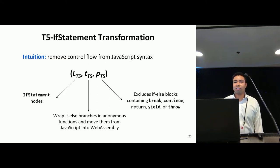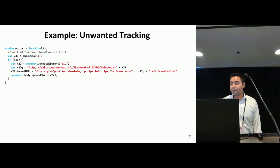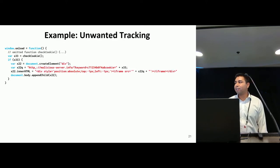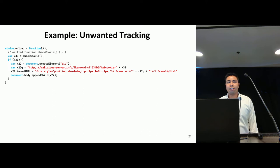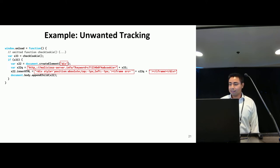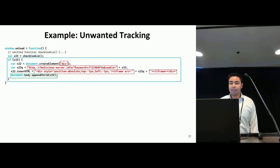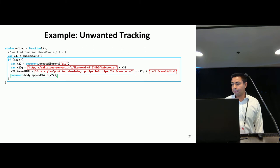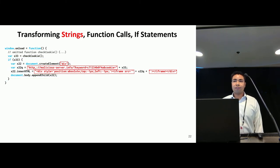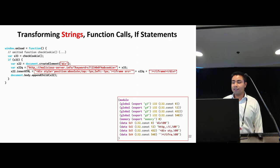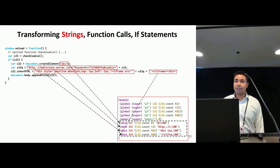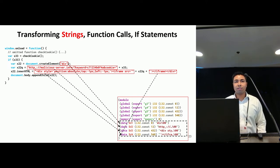I'll present a code example showing our transformations in action. Here's a JavaScript code snippet from a non-obfuscated tracker — this code snippet sends a user's browser cookie to some malicious server. WafiSkater first identifies places where the transformations are applicable: it begins by identifying the string literals, then the general function calls, and finally the if statement. WafiSkater then begins applying the transformations. The string literals are first moved over to the WebAssembly module by moving them into the data section of the WebAssembly module. The data section defines the initial data that's used and available to the module when it's first instantiated.